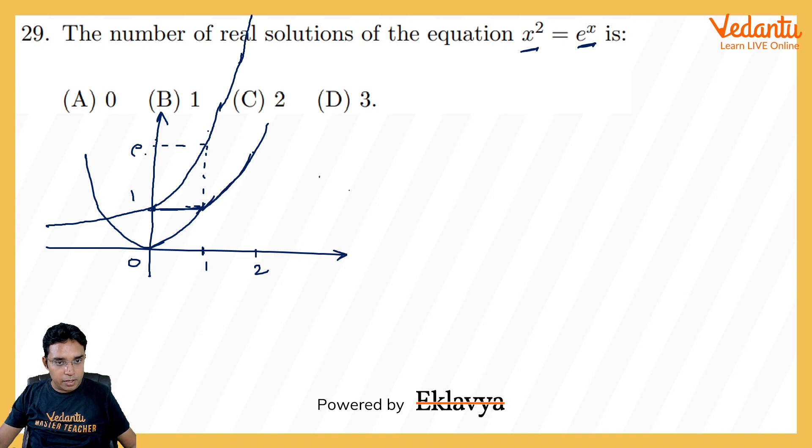Now at this point, if you check slope of this graph is 2x and x is equal to 1, the slope will be 2 only. Whereas at this point, if you check the slope is e power x, that will be e. So the slope is more here than at this point. So then definitely, this is going to increase rapidly than the graph of x square.